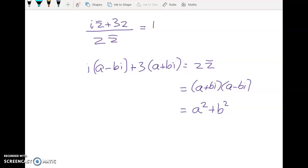On the left hand side I can expand everything out. We get ai plus b because i squared is negative 1 plus 3a plus 3bi. And I'm going to just sort out my real and my imaginary bits.